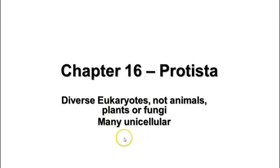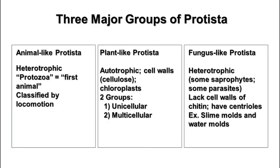This kingdom has many diverse organisms in it. Many of them, if not most of them, are unicellular. A few are multicellular, but there are also some that are colonial, and just lots and lots of different variety in this kingdom. There are three major groups of Protista.